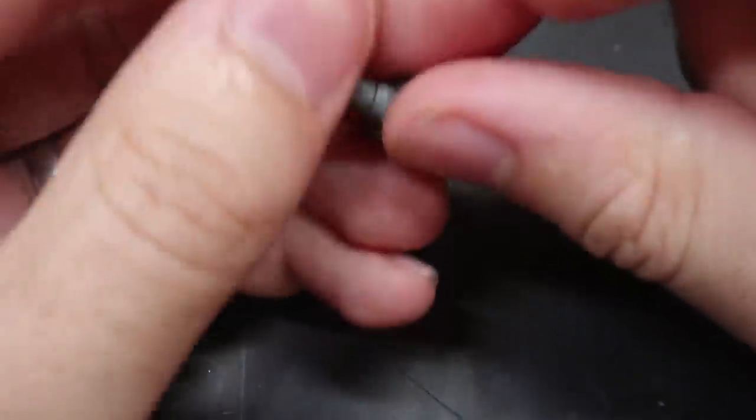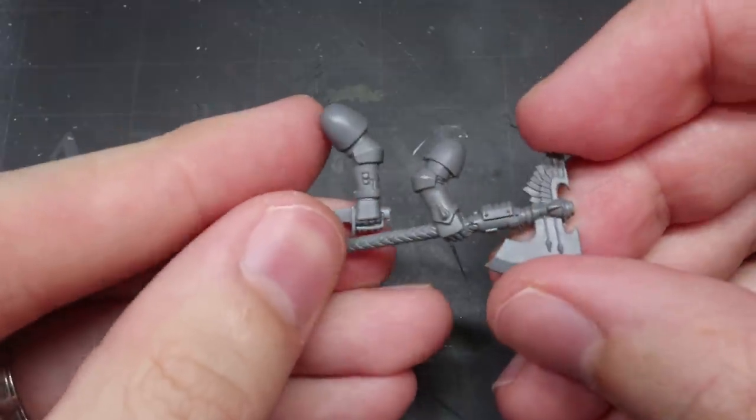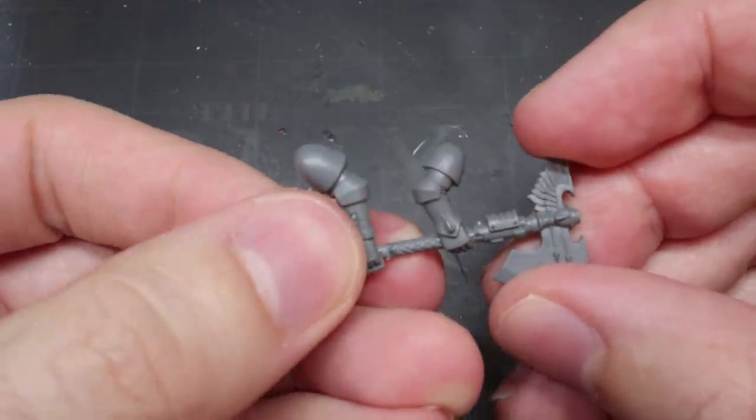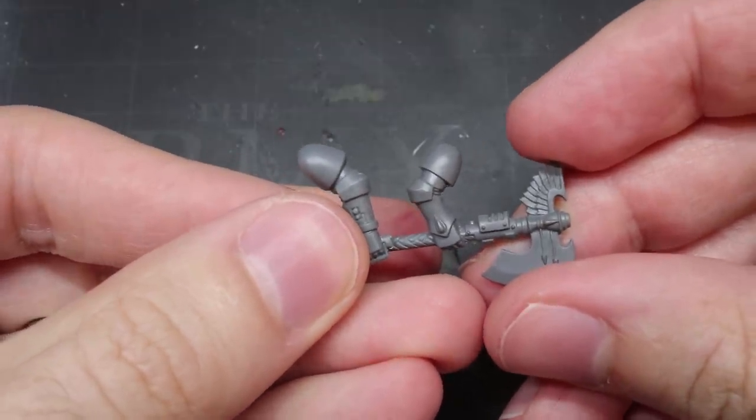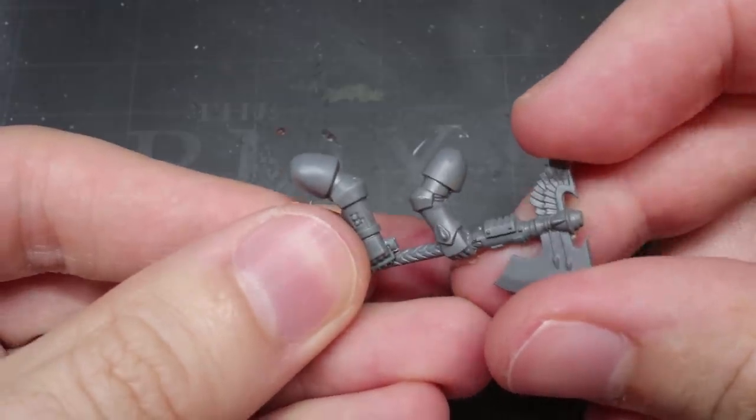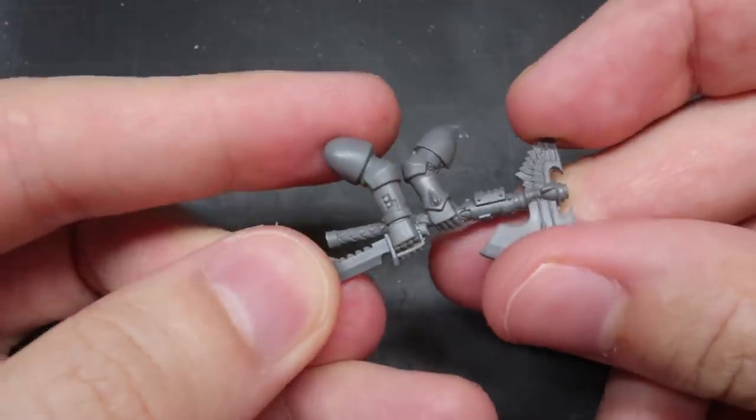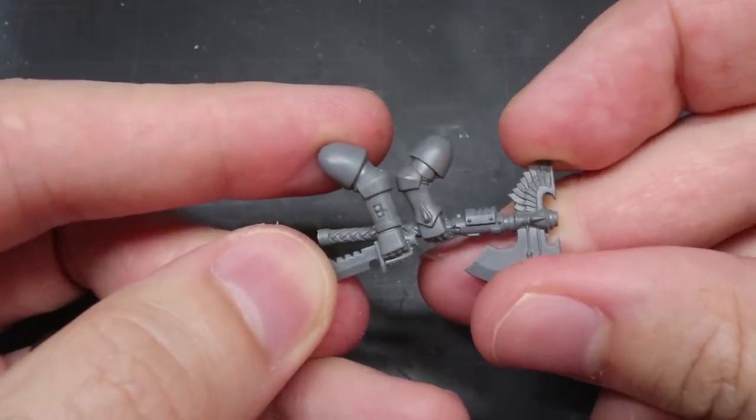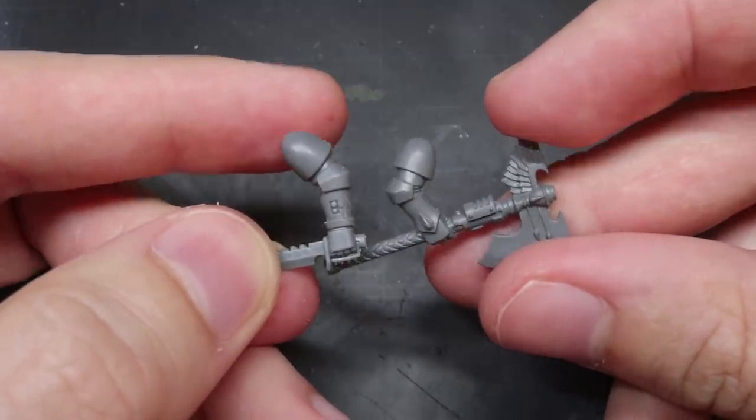For the weapons, I was originally going to use those from the Sanguinary Guard kit and attach them directly. However, against the larger Primaris scale torso and legs, these arms would look ridiculously small in comparison so I needed to use some Reaver arms instead. The only caveat with using these is that the weapon and the pistol arms are in the opposite arms to Dante but this is a pretty small difference that we can easily look over.